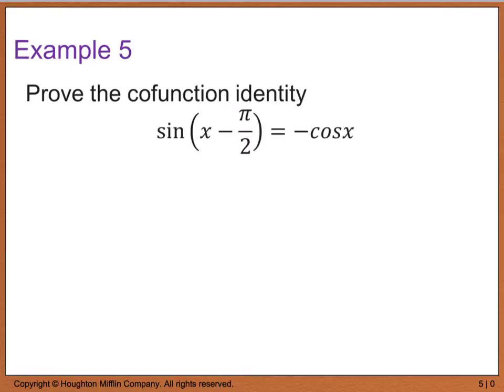We're going to begin with example 5, which says to prove the co-function identity: the sine of the quantity x minus pi over 2 is equal to negative cosine of x. Using our difference formula for sine, we rewrite this as the sine of x times the cosine of pi over 2